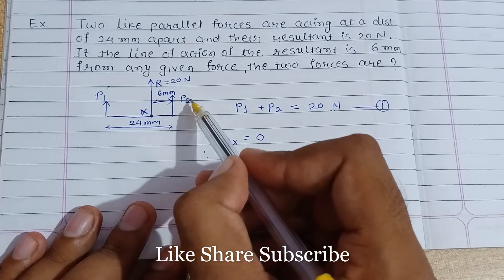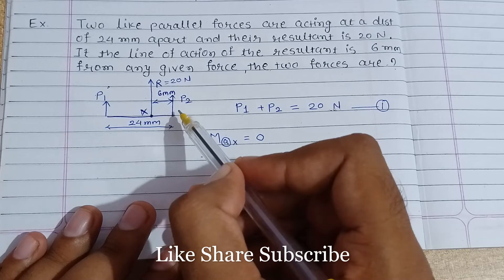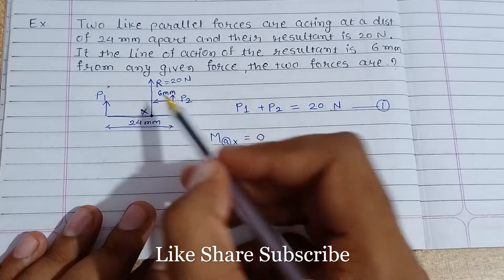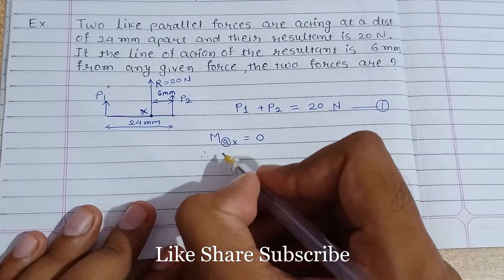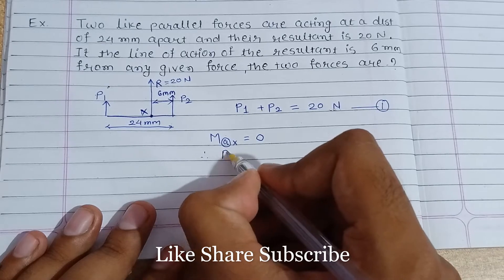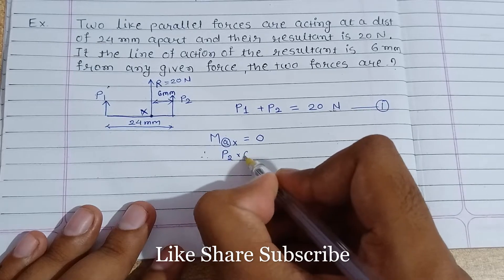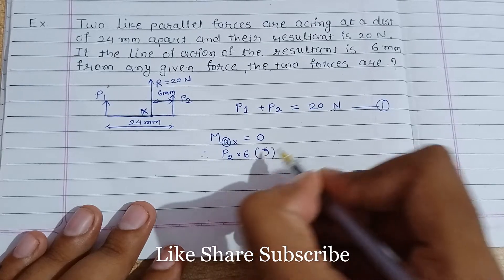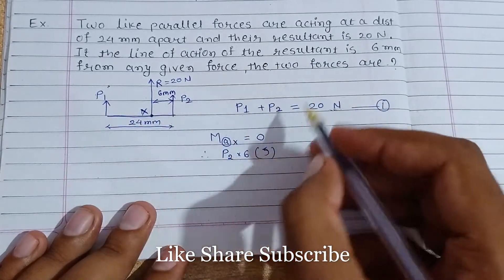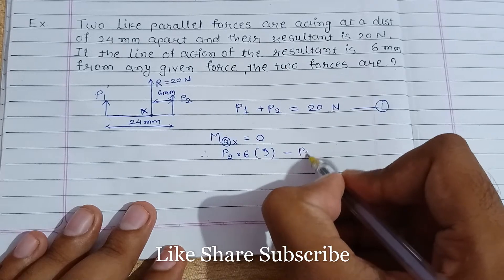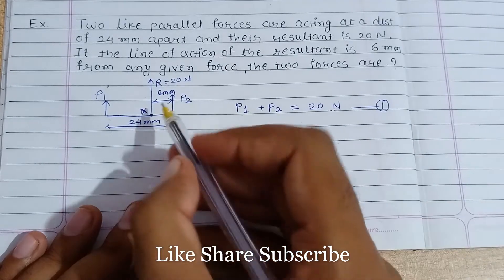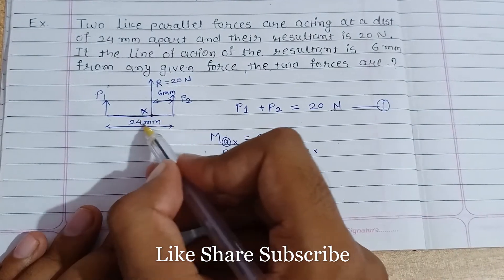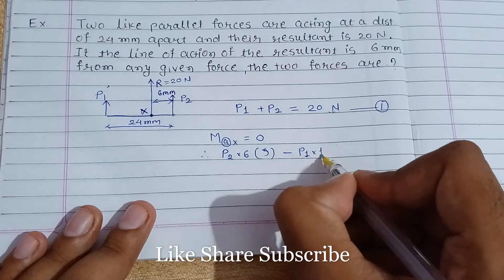Let's consider the clockwise moment as positive and anti-clockwise moment as positive. Due to the force P2, the moment will be in the anti-clockwise direction. So P2 into 6, direction is anti-clockwise, that is positive. Minus P1 into 18 (if we subtract 6 from 24), and direction is clockwise, so that's why it is negative, equal to zero.